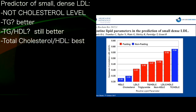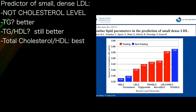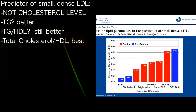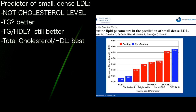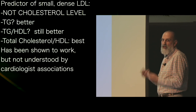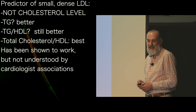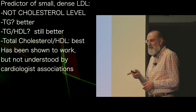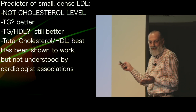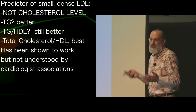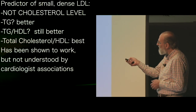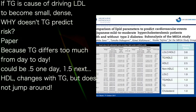The triglyceride level predicts it far better than the cholesterol level. Triglyceride divided by HDL is better again. But whether I like it or not, this measure here is the best predictor of small dense LDL, which is the total cholesterol to HDL ratio. A lot of people don't like that ratio because it's the one cardiology societies promote — they promote it because it works. They're predicting risk. They don't fully understand it, but they know that it works.